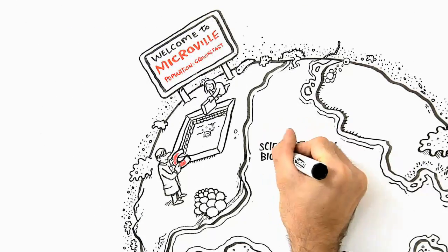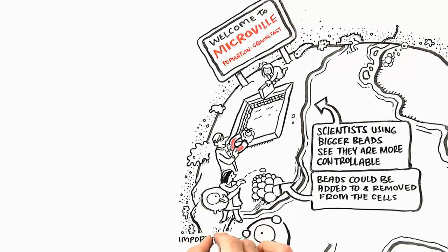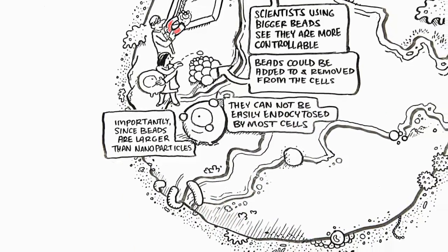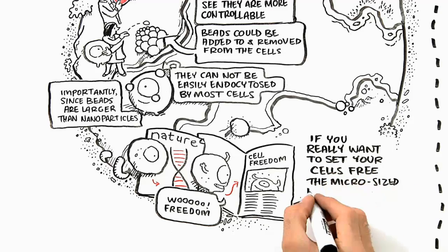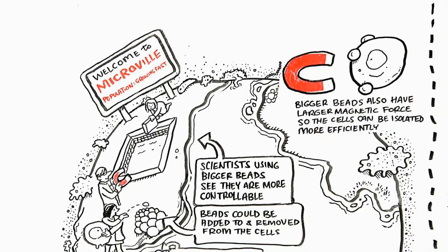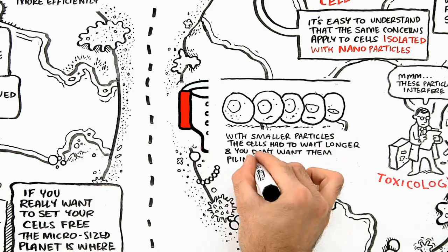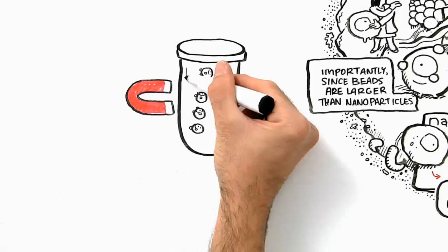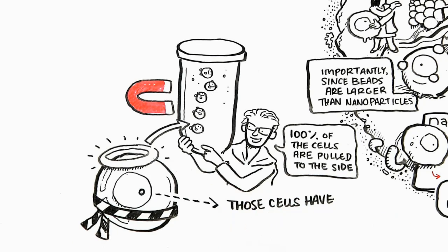Back on the micro-sized planet, scientists using bigger beads see that they are more controllable. The beads can be added to and removed from the cells. Importantly, since the beads are larger than nanoparticles, they cannot easily be endocytosed by most cells. And if you want to isolate cells that are particle or bead-free — if you really want to set your cells free — then the micro-sized planet is where you want to live. The bigger beads also have larger magnetic force, so the cells can be isolated more efficiently. Dr. Fossman's team from Harvard found that with smaller particles, the cells had to wait longer, and you don't want them piling up on top of each other, getting starved from oxygen and nutrients.